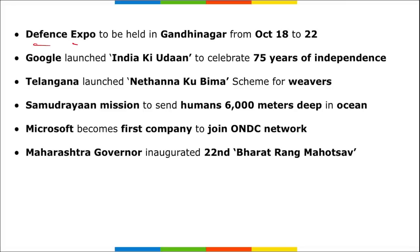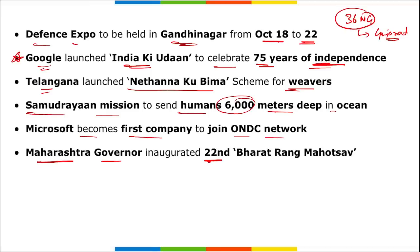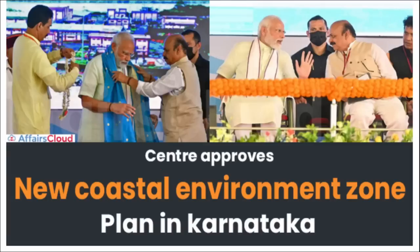Moving on - Defense Expo will be held in Gandhinagar from 18 to 22 October. The 36th National Games will also be held in Gujarat. Google launched 'India ki Udan' to celebrate 75 years of independence. Telangana launched the Nitharsha Ku Bima scheme. The Samudriyan mission aims to send humans 6,000 meters deep in the ocean. Microsoft became the first company to join the ONDC network. Maharashtra Governor inaugurated the 22nd Bharatrang Mahotsav.